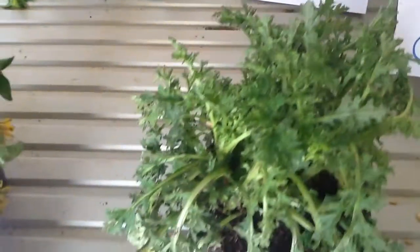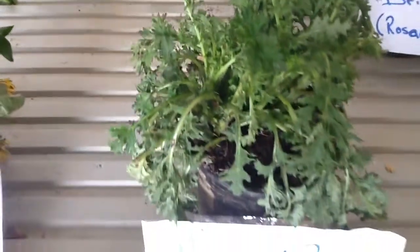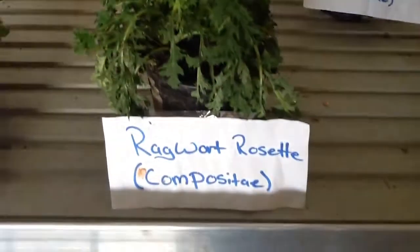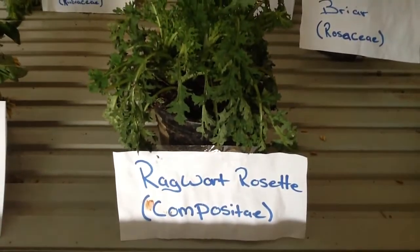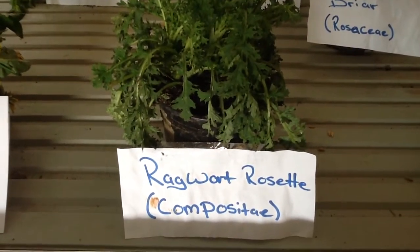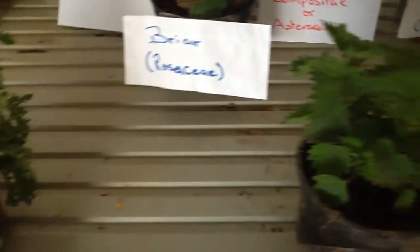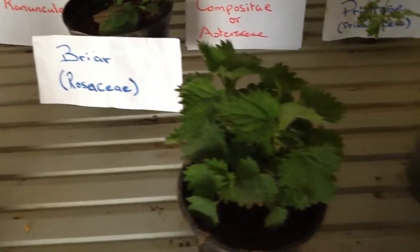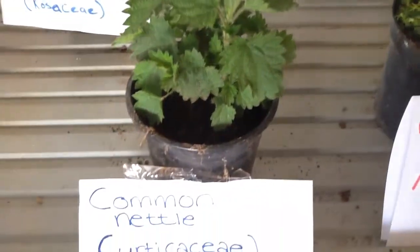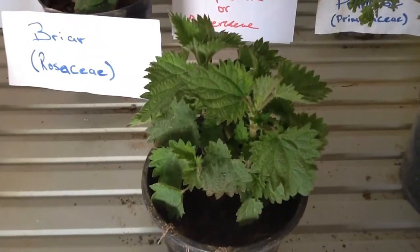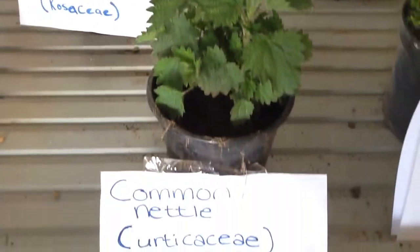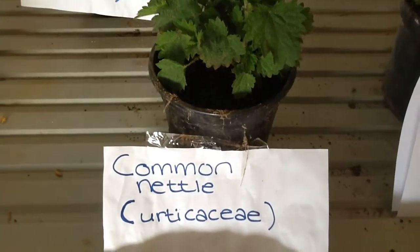The next one is Ragwort. It has a yellow flower also, and it's from the family Compositae. The next one is the Common Nettle, and it's from the family Cruciferae.